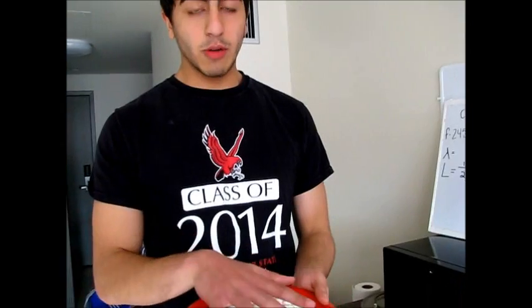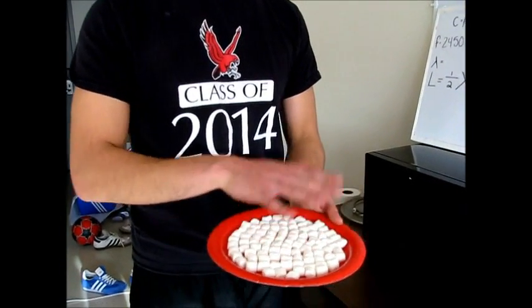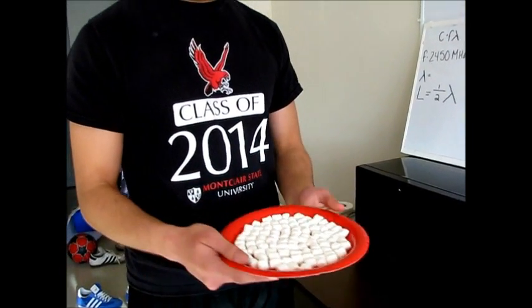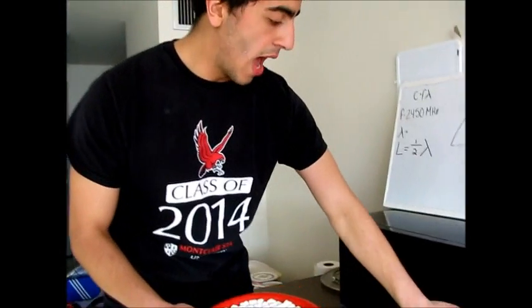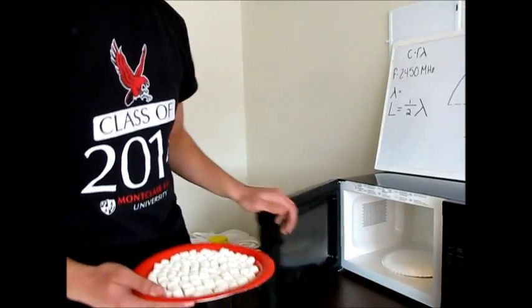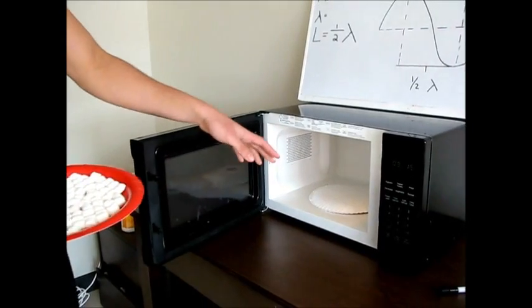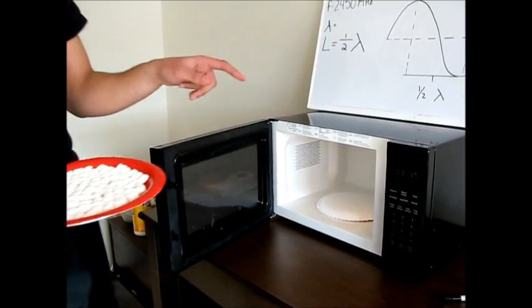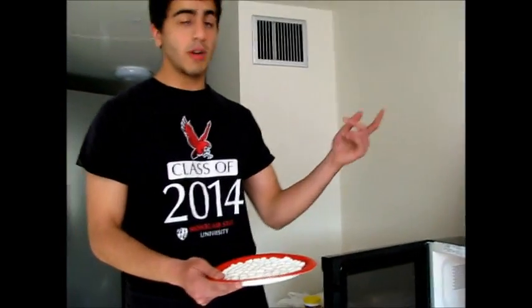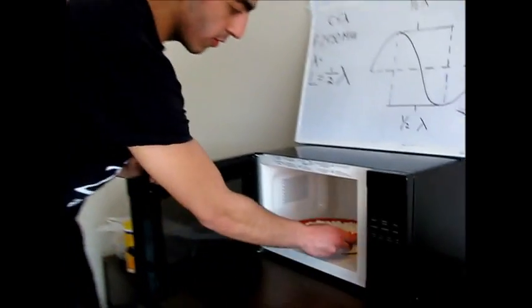What you're going to make sure is you have your marshmallows evenly on the plate and distributed across the whole entire surface. What we're going to do is take out the rotating plate to make sure that it doesn't cook evenly and we can distinctly see where it melts, which is going to be the crest and the trough. We're going to put it in here for a minute.